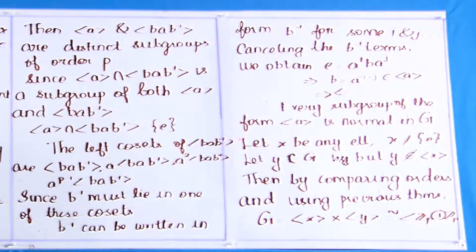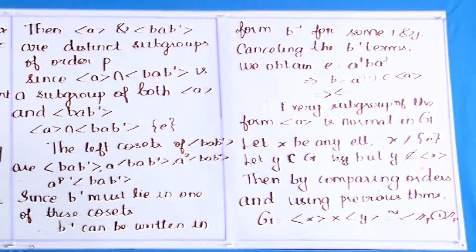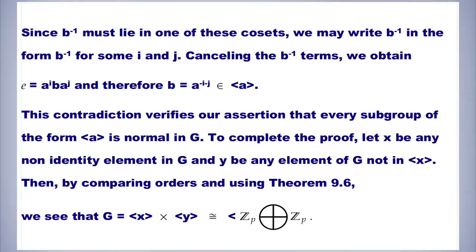Therefore every subgroup ⟨a⟩ is normal in G. Let x be any non-identity element and y ∈ G with y ∉ ⟨x⟩. By comparing orders and using previous results, G = ⟨x⟩⟨y⟩, which is isomorphic to Z_p × Z_p. Hence the theorem is proved.